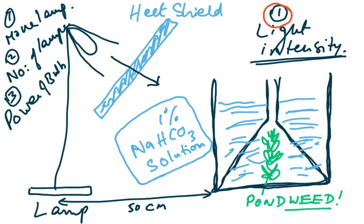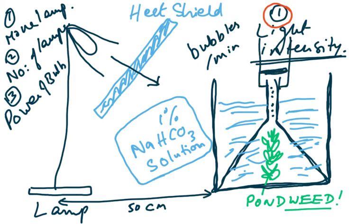We can measure bubbles of oxygen coming out — bubbles per minute — but this is not ideal because bubbles can be of different sizes. It is better to measure the volume of oxygen using a gas syringe placed on top. Both methods would be accepted, but measuring volume is more accurate.